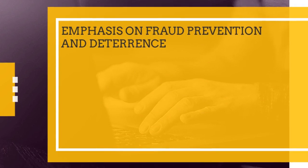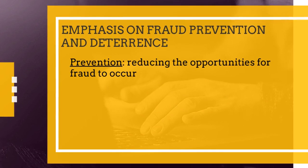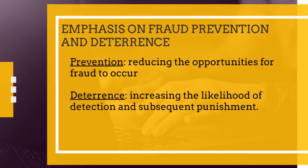AUC Section 240 places a strong emphasis on two critical components of fraud management: prevention and deterrence. Prevention focuses on reducing the opportunities for fraud to occur. This can be achieved through the design and implementation of robust internal controls, segregation of duties, access restrictions, and continuous monitoring of financial transactions. By minimizing the opportunities for fraudulent activities, organizations can substantially decrease the likelihood of fraud taking place.